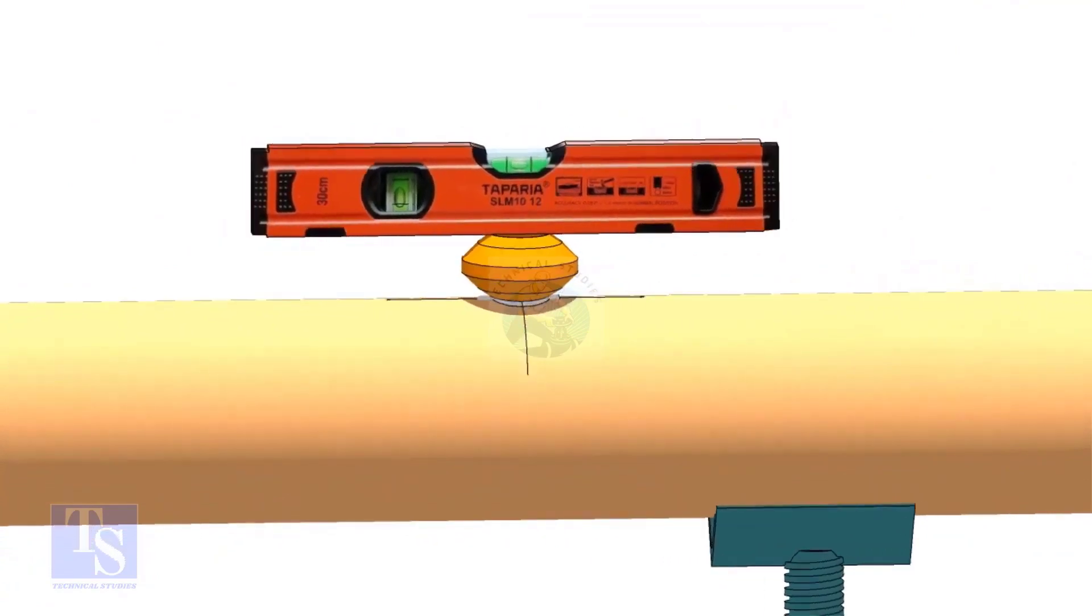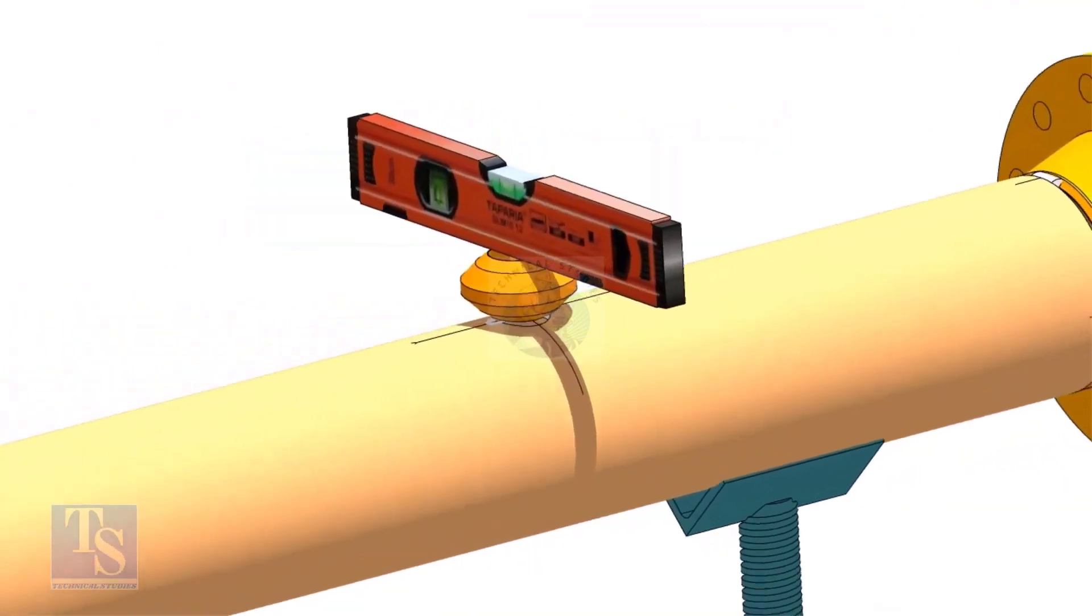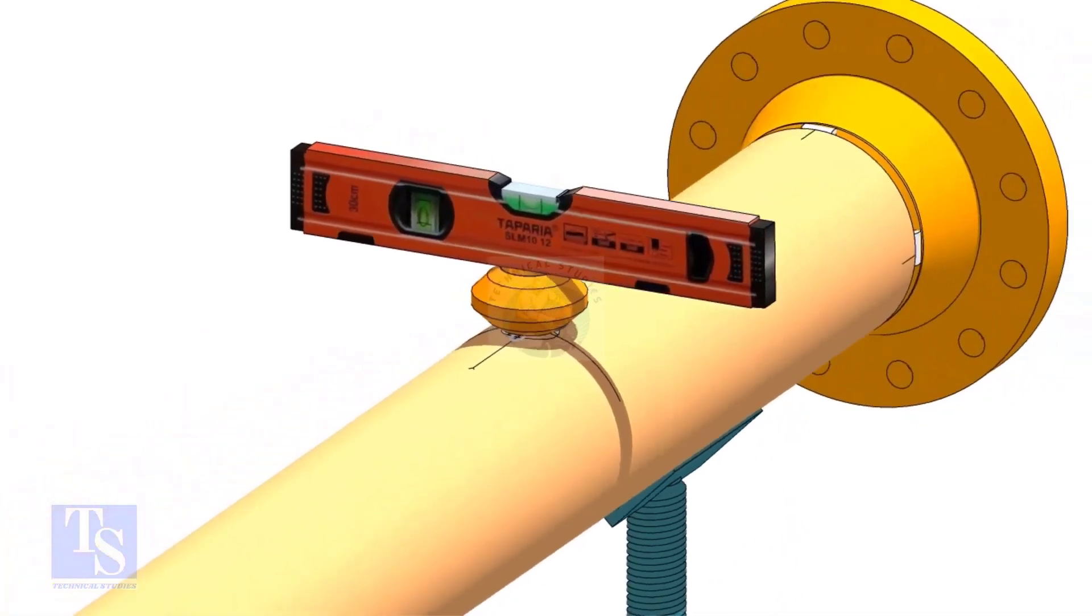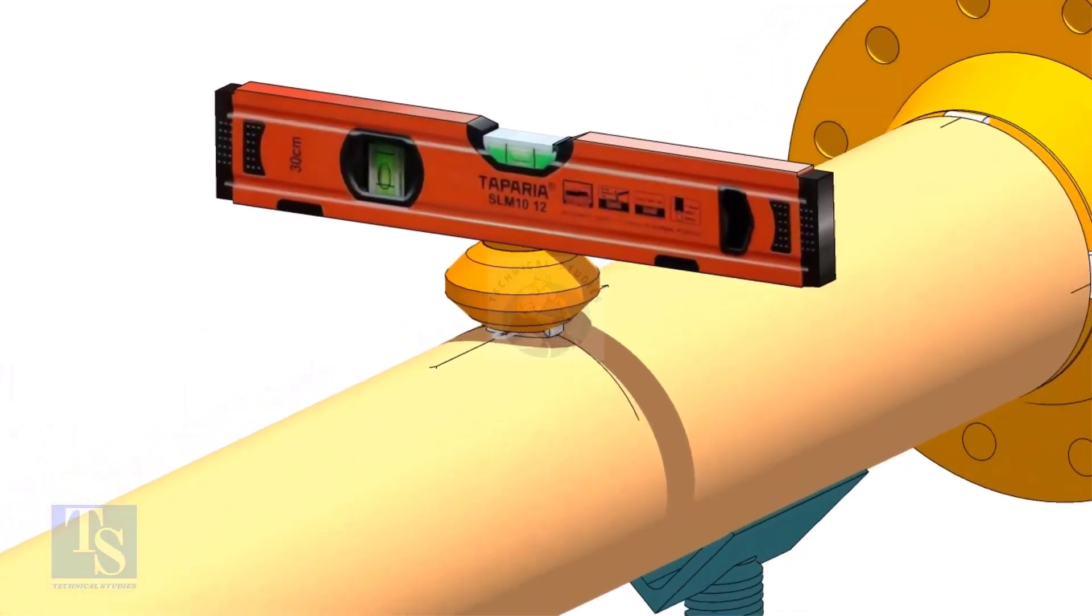Check the level from both sides. Tack weld on the sides of the OLED.